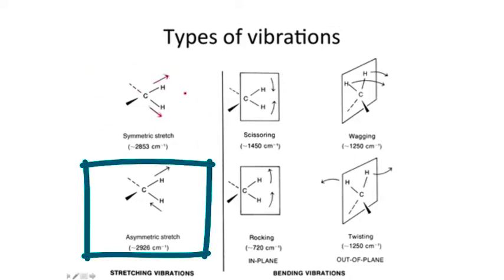Another vibration is an asymmetric stretch, where one of the bonds would be lengthening while the other bond is shortening. Those stretches have distinct frequencies depending on the two nuclei involved. For example, CHs stretch and retract at a higher frequency than do carbon-oxygen bonds.